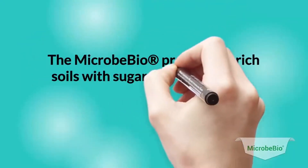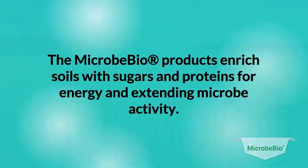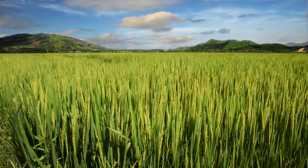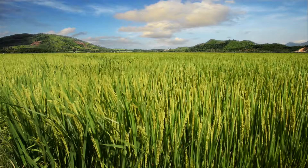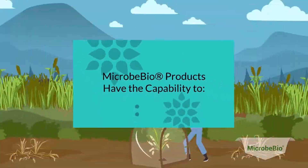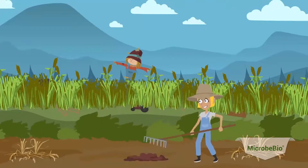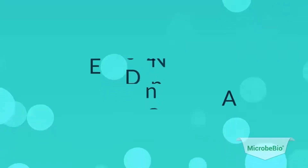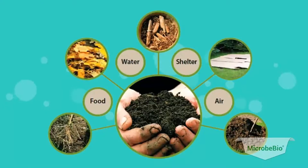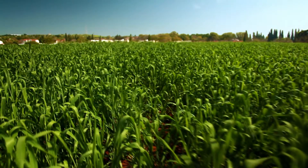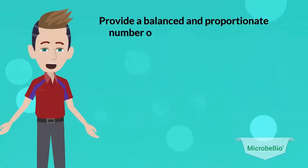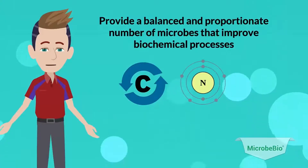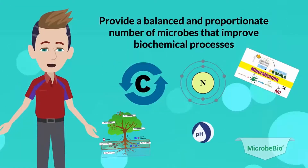Microbe Bio products enrich soils with sugars and proteins for energy and extending microbe activity. They can be used on any pre-planting treatments, directly to seeds to create a richer soil base, and over the top, which generates far superior harvests. Microbe Bio products have the capability to protect and rehabilitate the soil, improve the crop, heal and protect the soil for future generations of crops, reduce negative environmental impacts, and effectively break down organic matter which increases both carbon and nutrient bioavailability in the soil, while also controlling and reducing salinity and heavy metals.